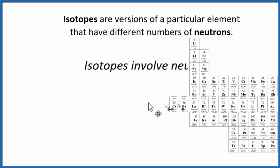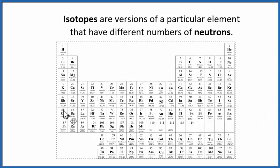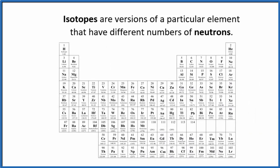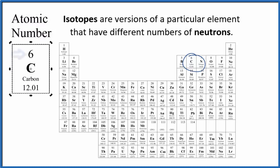The periodic table gives us a list of all the different elements. So we look up carbon right here, and carbon, that's atomic number six. Because it has atomic number six, that means it has six protons. That's what makes it the element carbon.